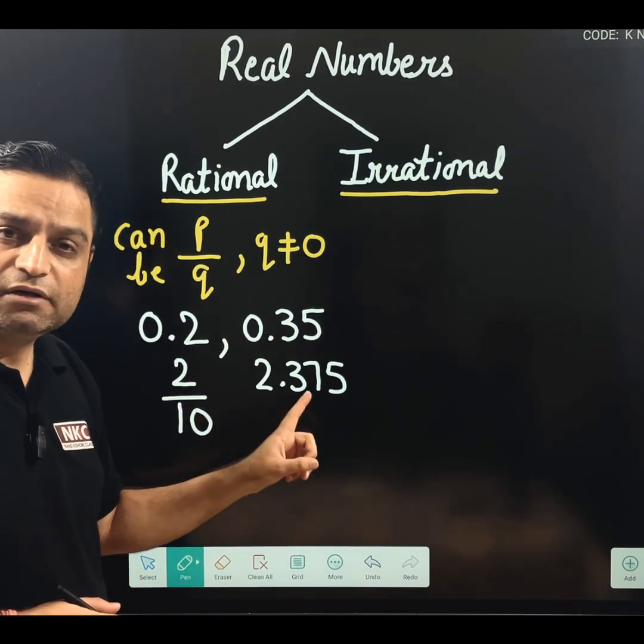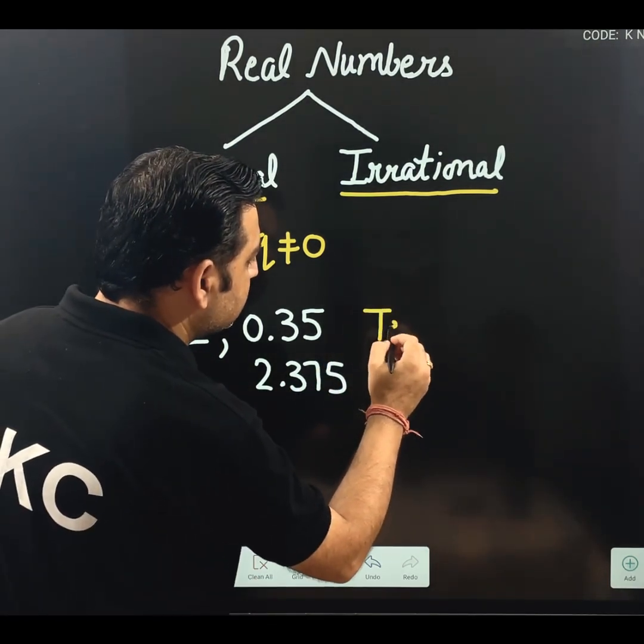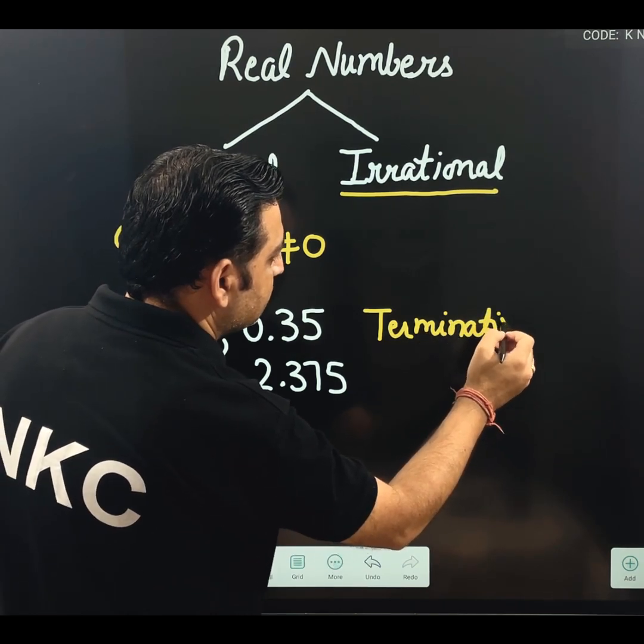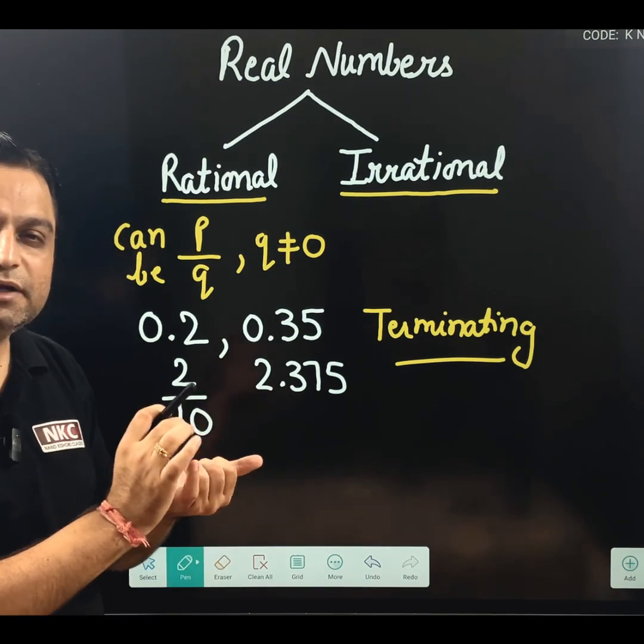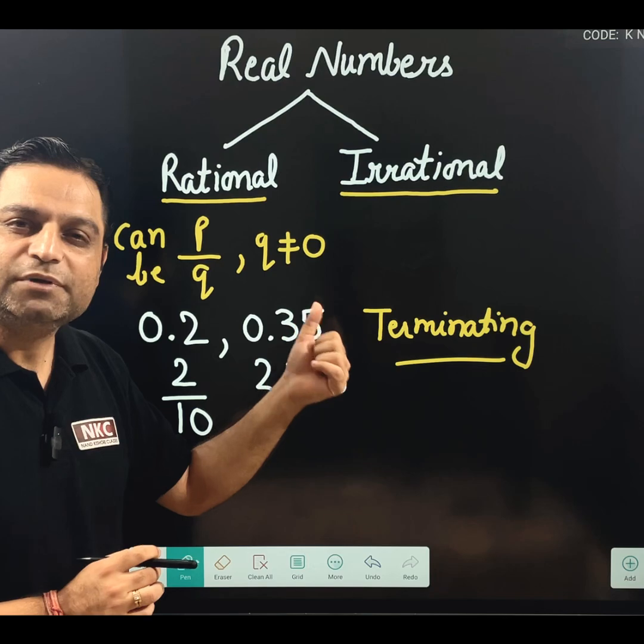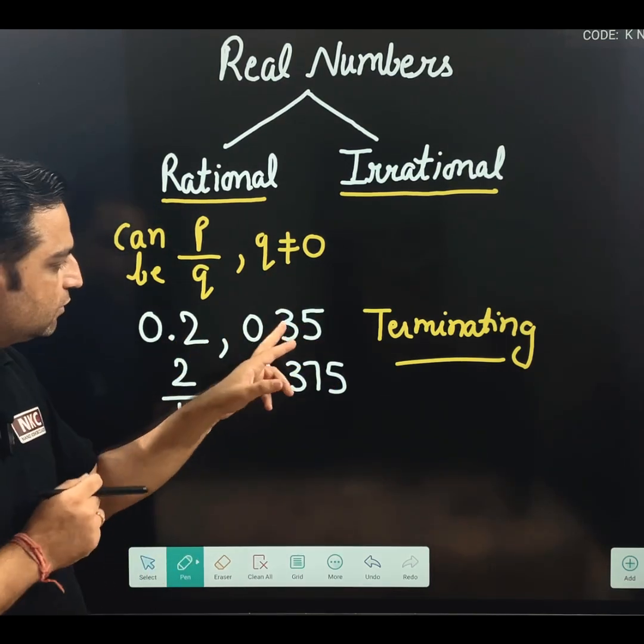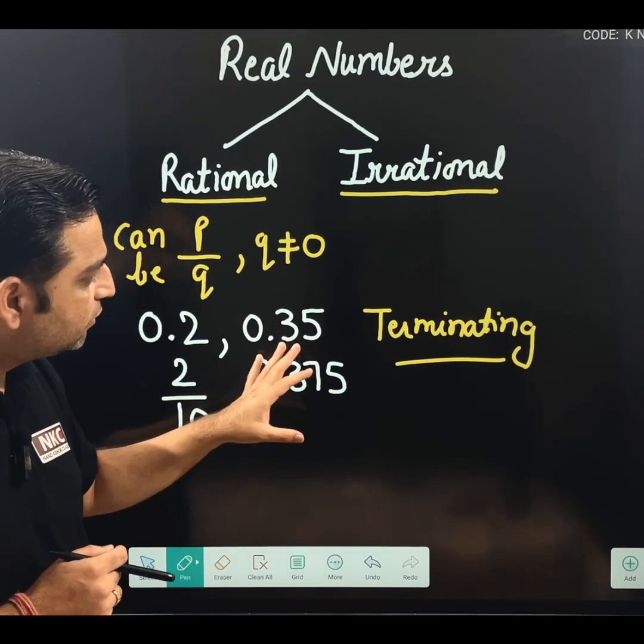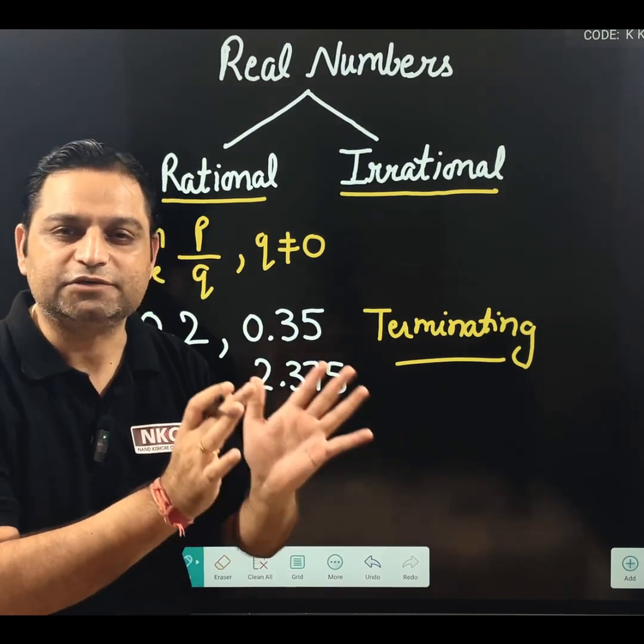These decimal numbers which I have written as of now on the board, they are actually terminating decimal expansions. Terminating means after decimal, it is being ended somewhere. See, it was ended after 1 digit, it was ended after 2 digits, it was ended after 3 digits. That is why these are known as terminating decimal expansions.